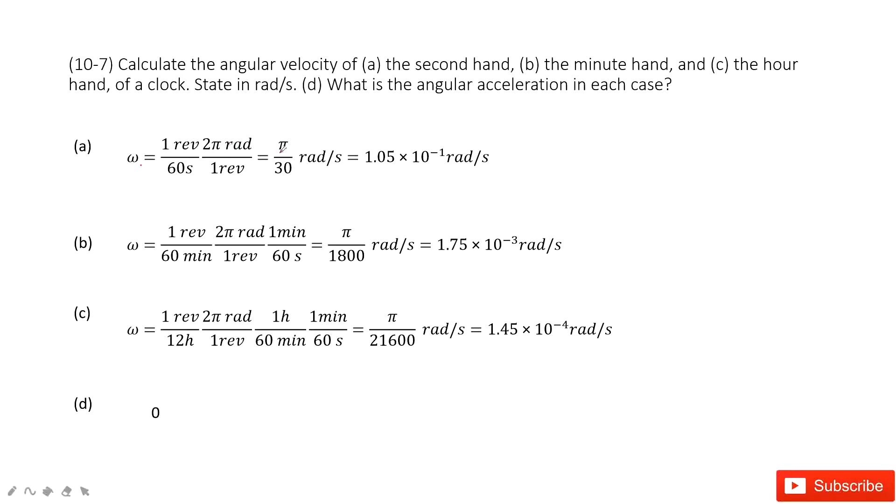So then we calculate this equation. We find it is π over 30 radians per second. And then we get the final answer.